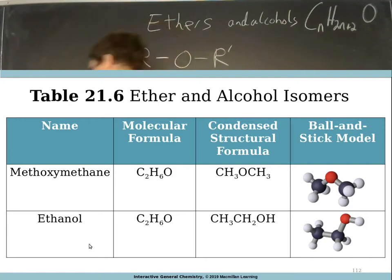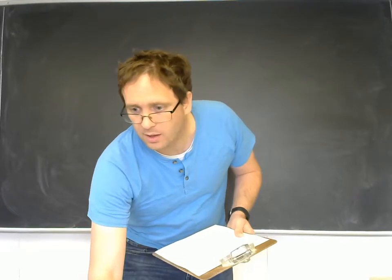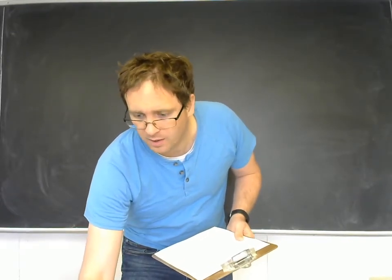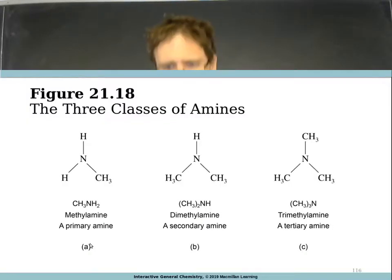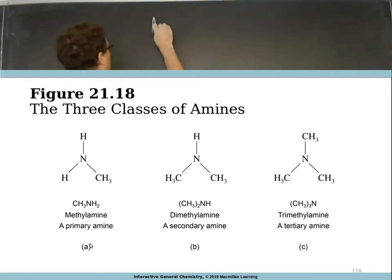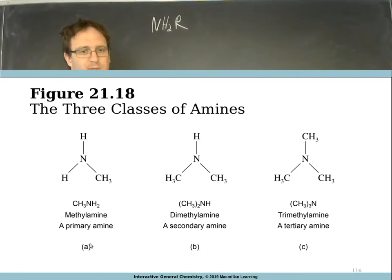There's one more functional group that we want to talk about today. Those are amines - sometimes they're called amines, sometimes amines. Amines are just where you have like ammonia, NH3, but you replace one or more of the hydrogens with alkyl groups. You can have a primary amine, which is NH2R. We see a primary amine right here. An example would be methylamine.